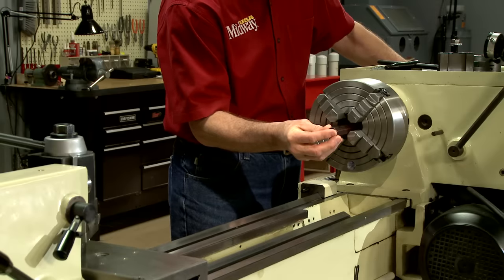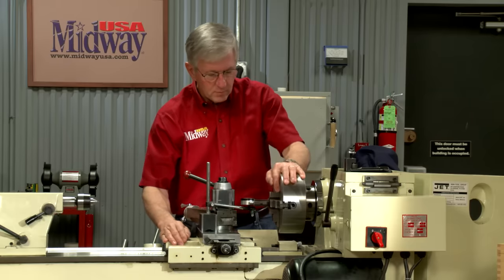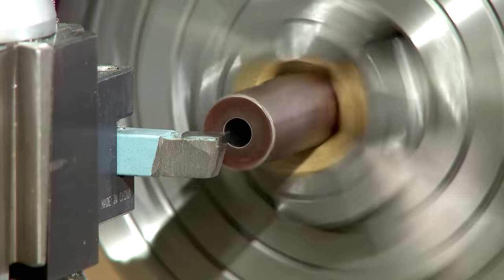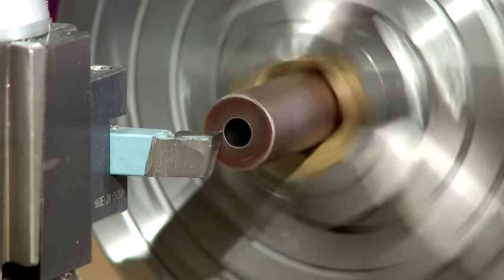The next step is to re-crown the muzzle. I've refixtured the barrel in the lathe for this process. The original crown was flat which I'll preserve. Just need to remove a few thousandths to clean up the face.